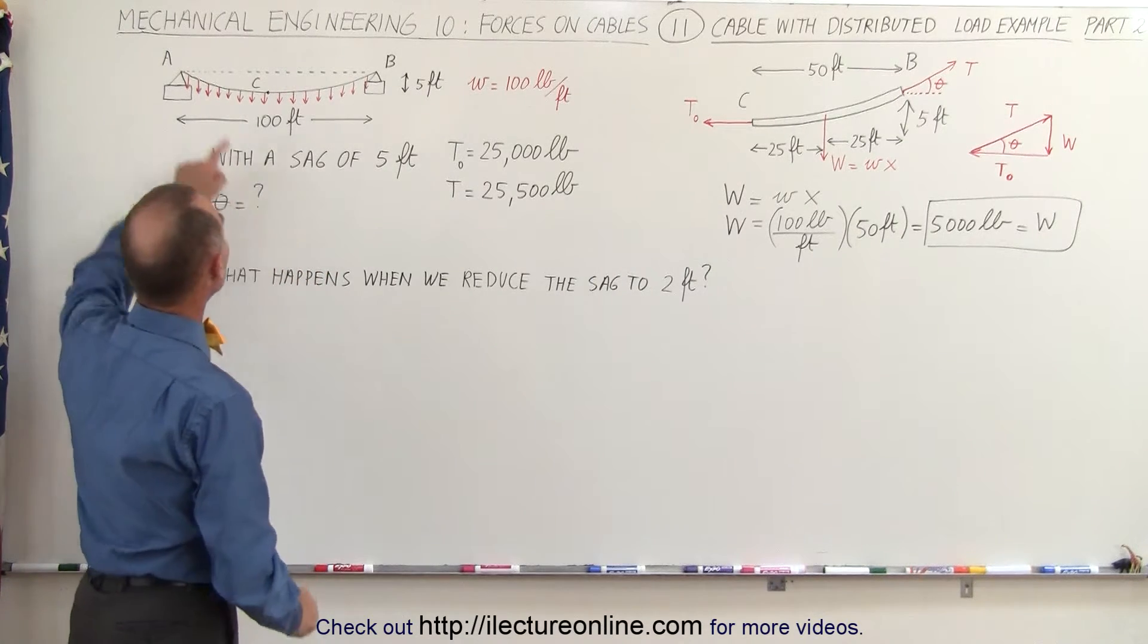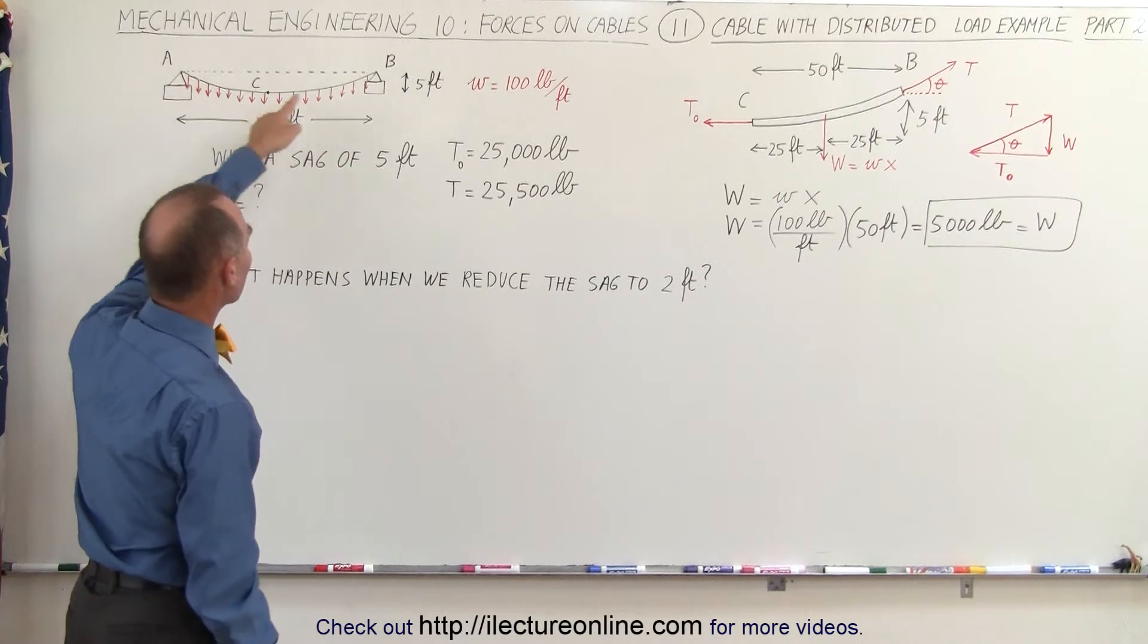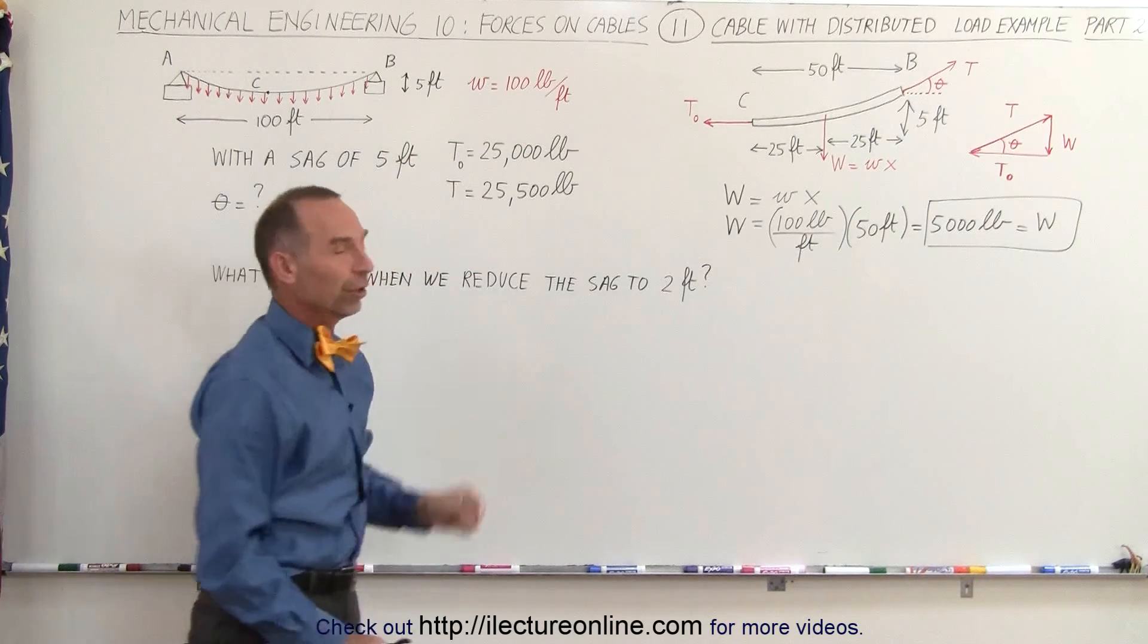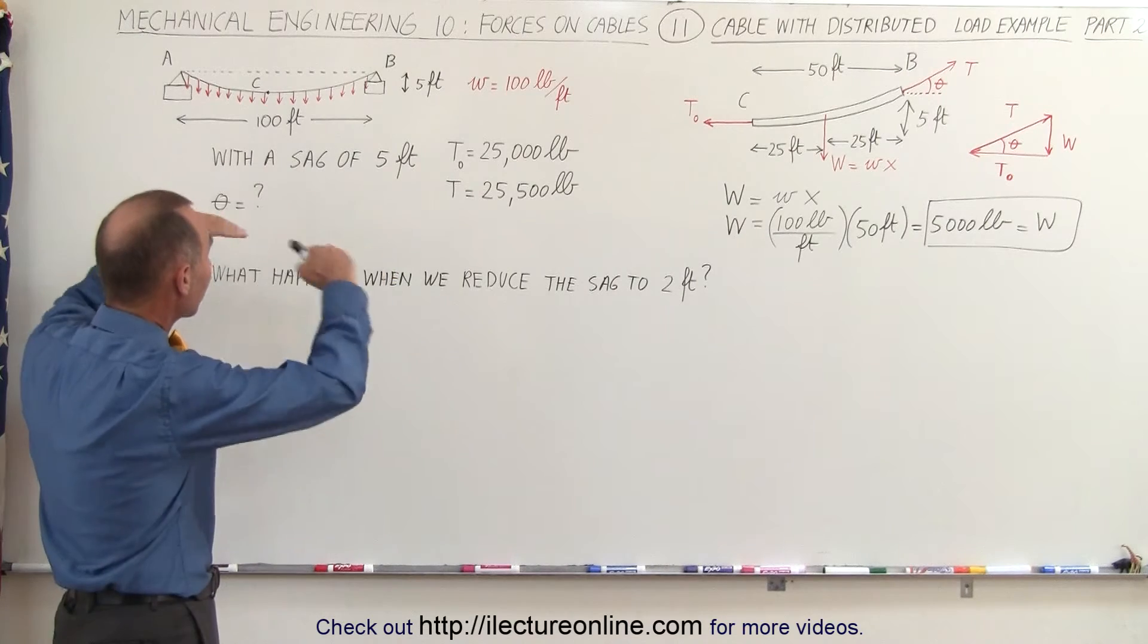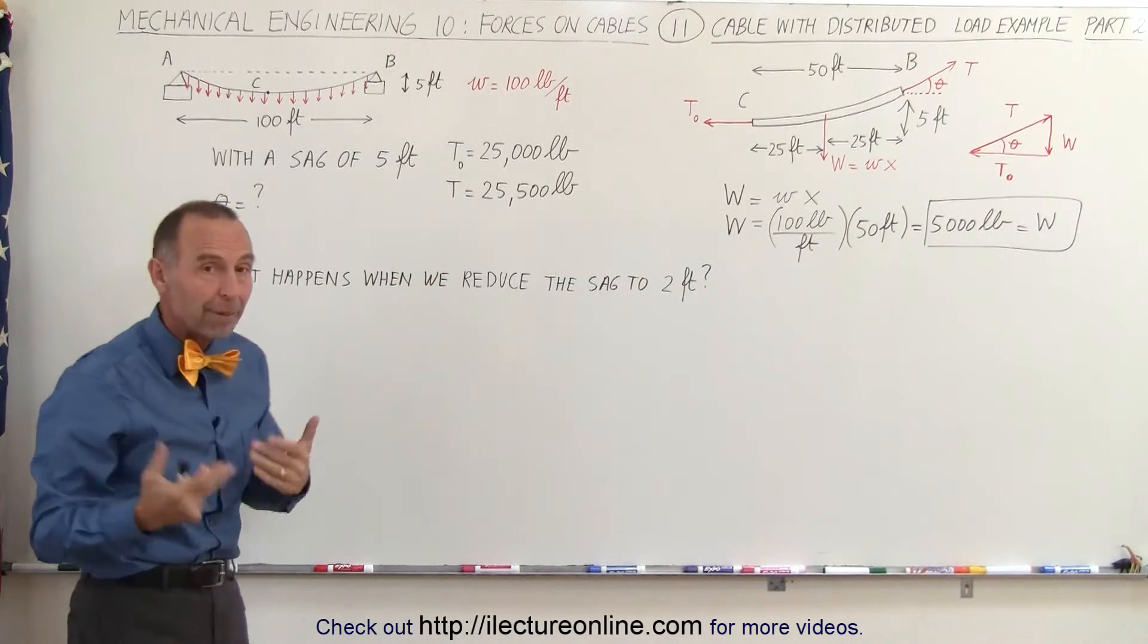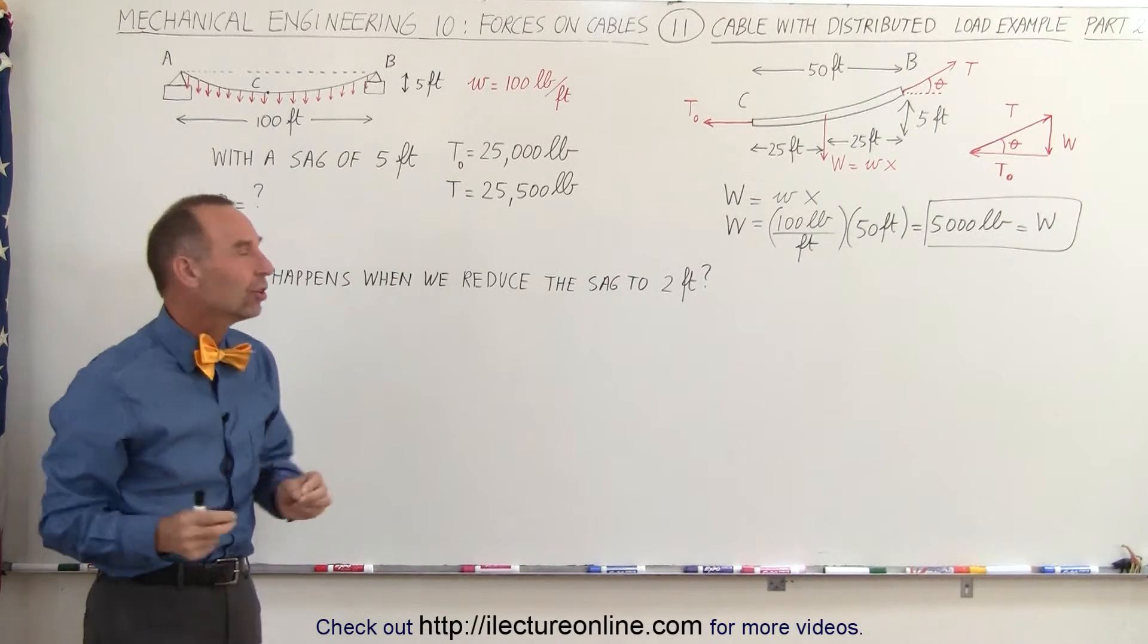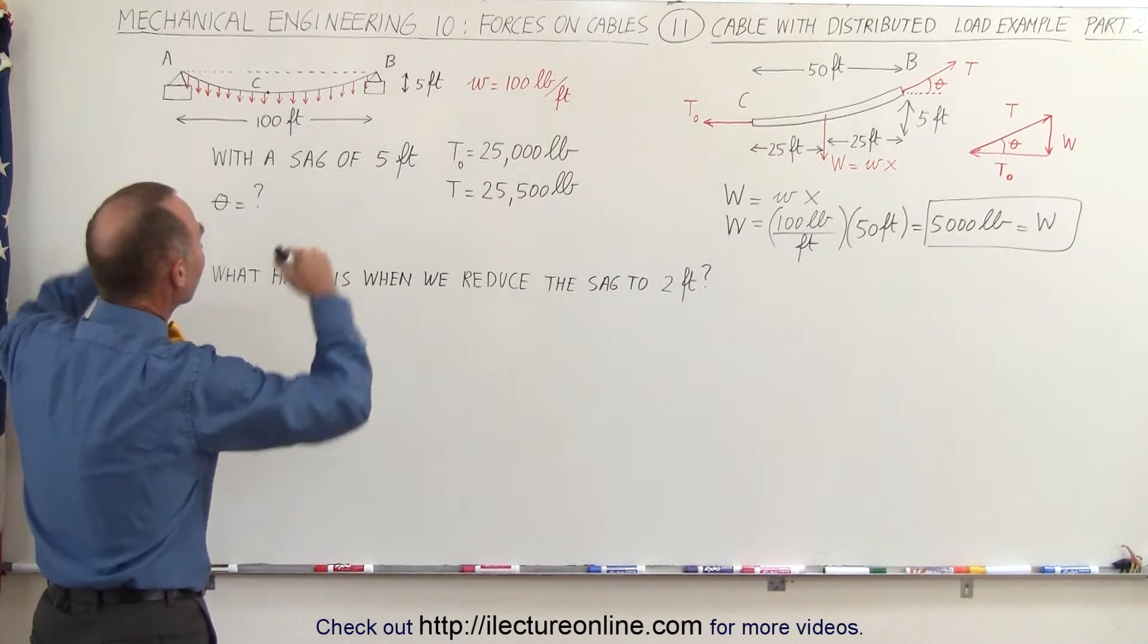In the previous video we had a hanging cable with a distributed load of 100 pounds per foot. We can approximate it as a situation where the shape of the cable is going to be parabolic because there's enough tension on the cable so that the sag isn't very much.